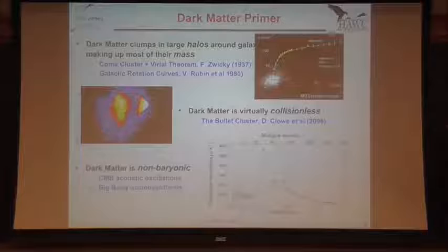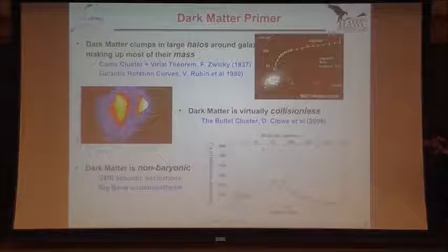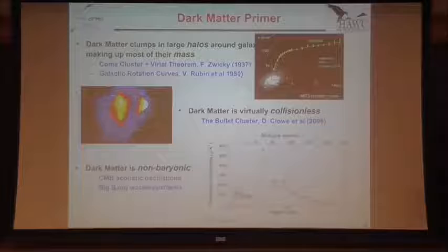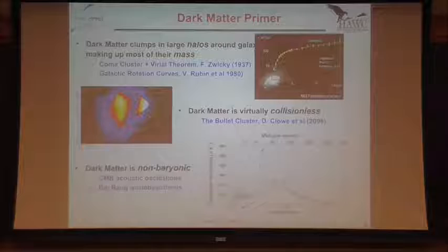This is just your one-slide dark matter primer. From the observational evidence that we have for dark matter, there are a couple of things we can tell about it. One is the rotation curves in spiral galaxies, where the stars in the outskirts are going way too fast to be gravitationally bound by the visible matter alone. Therefore, there's got to be something else holding this thing together. That's telling us that dark matter clumps in large halos around galaxies.